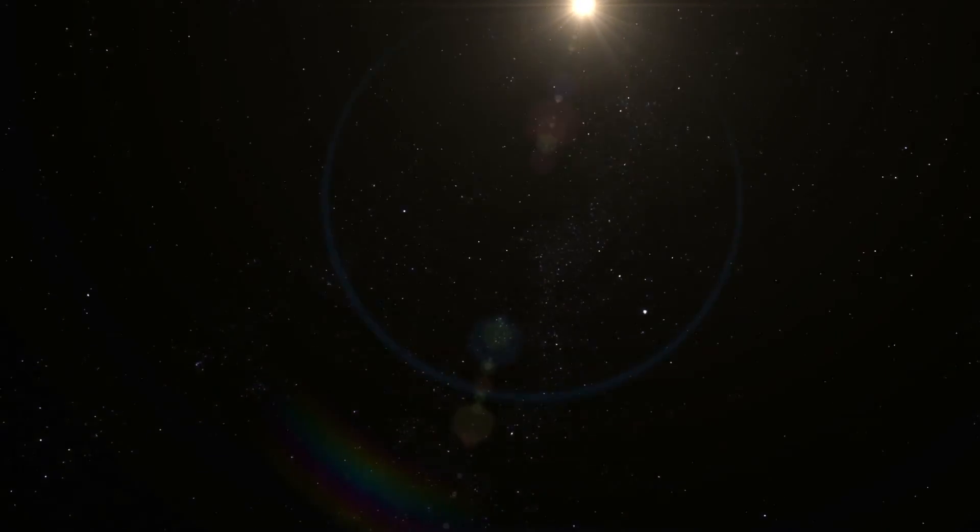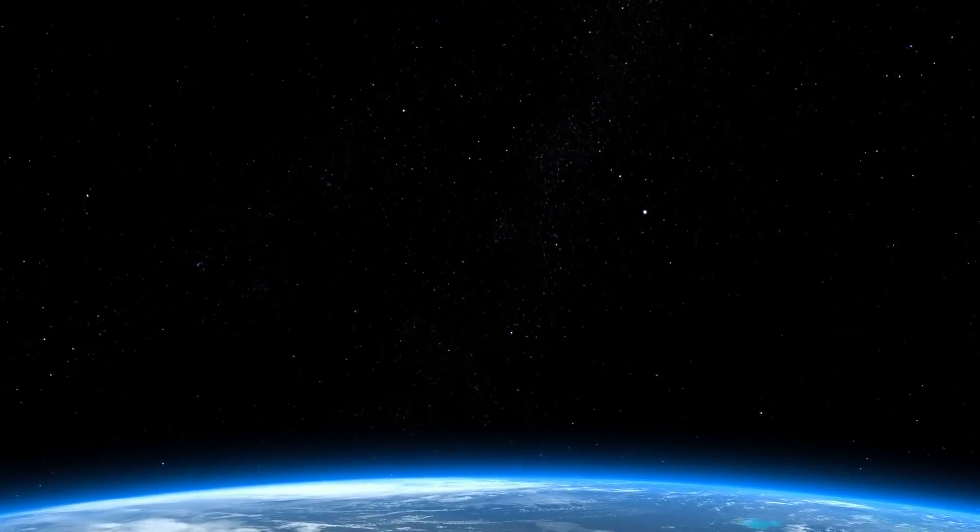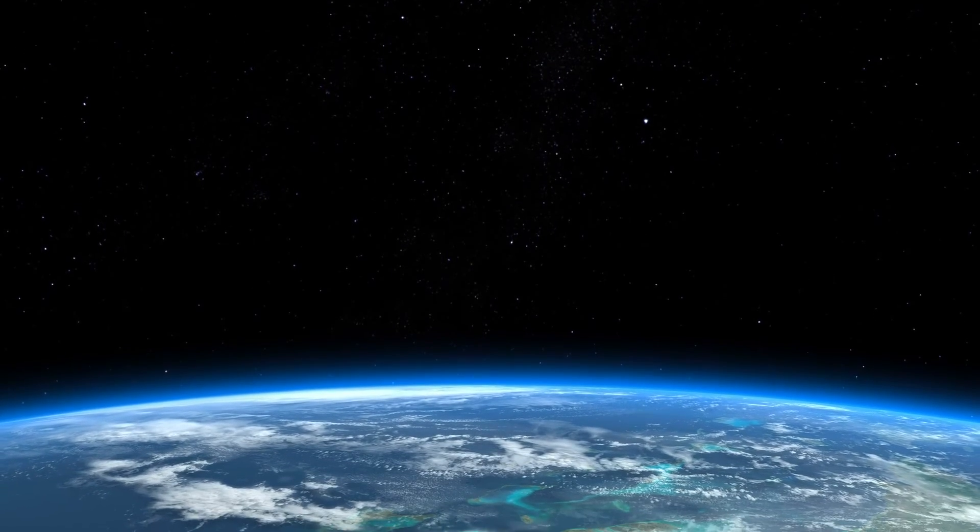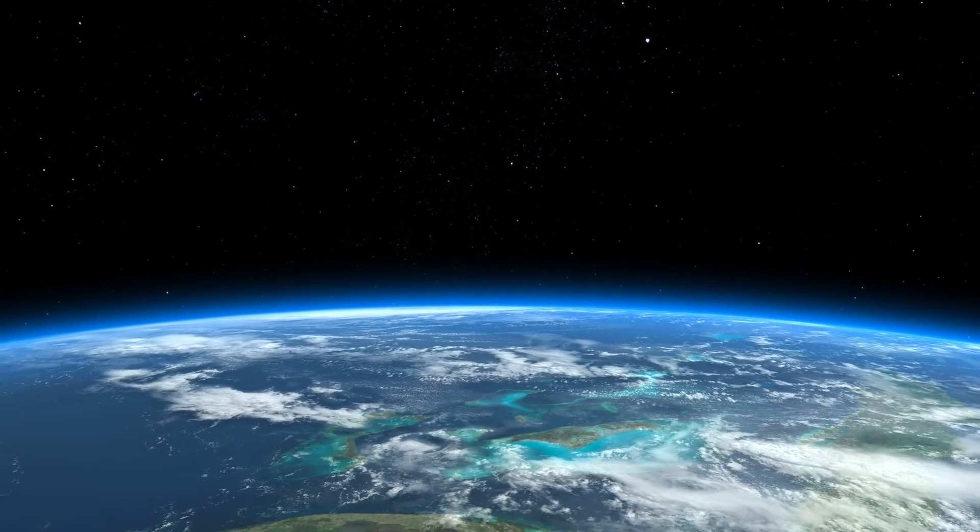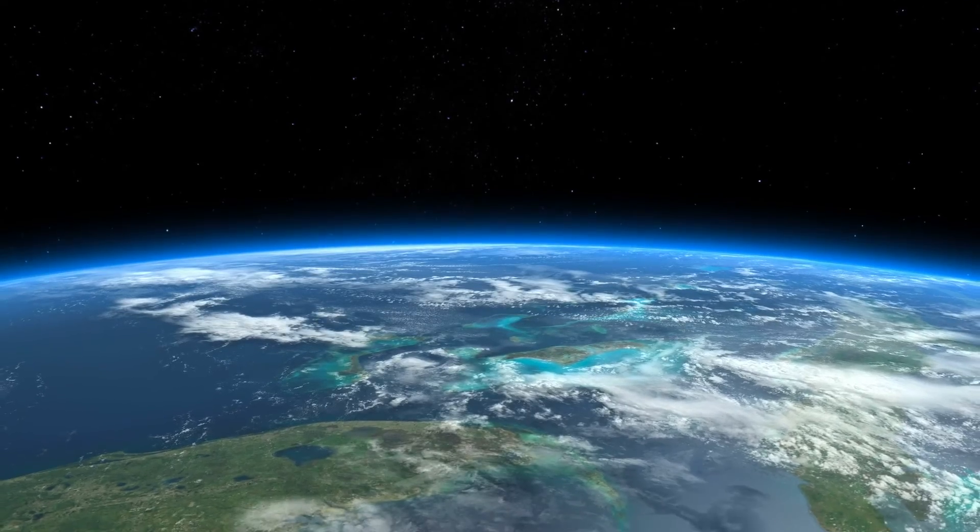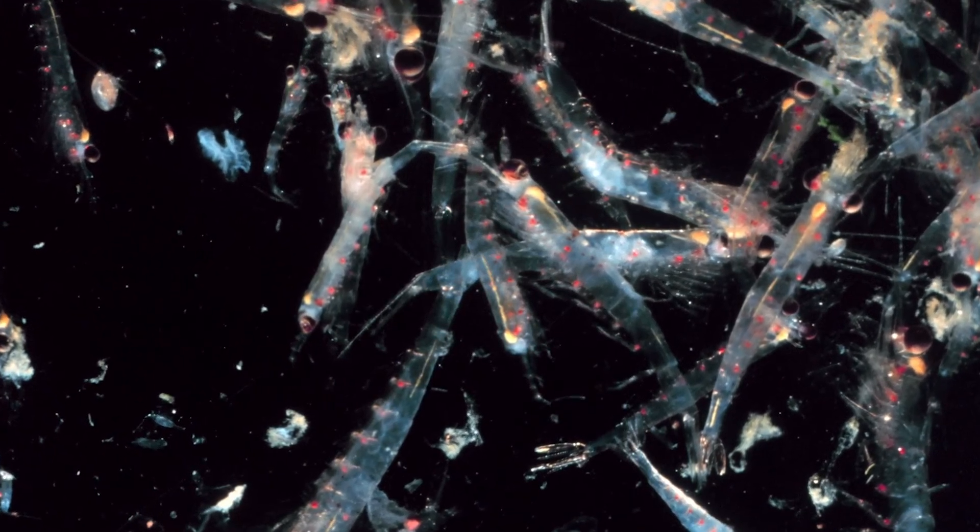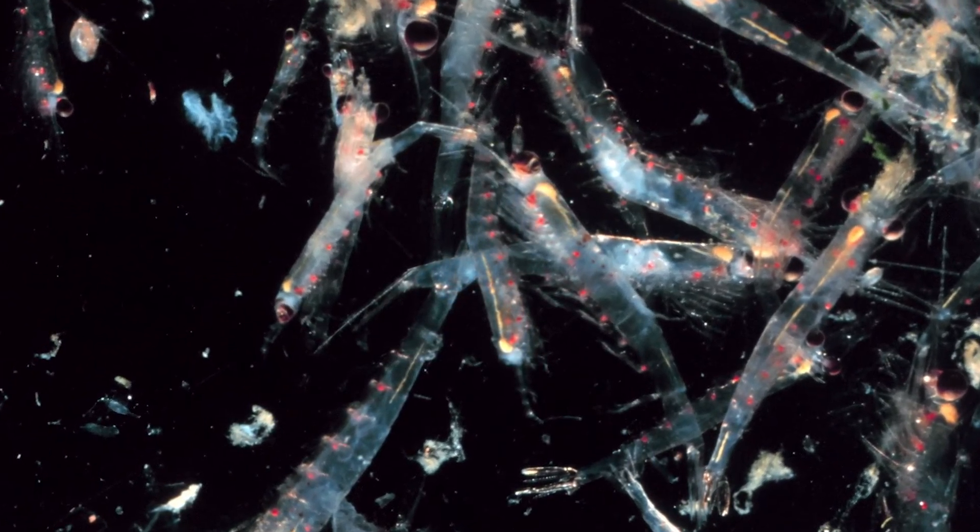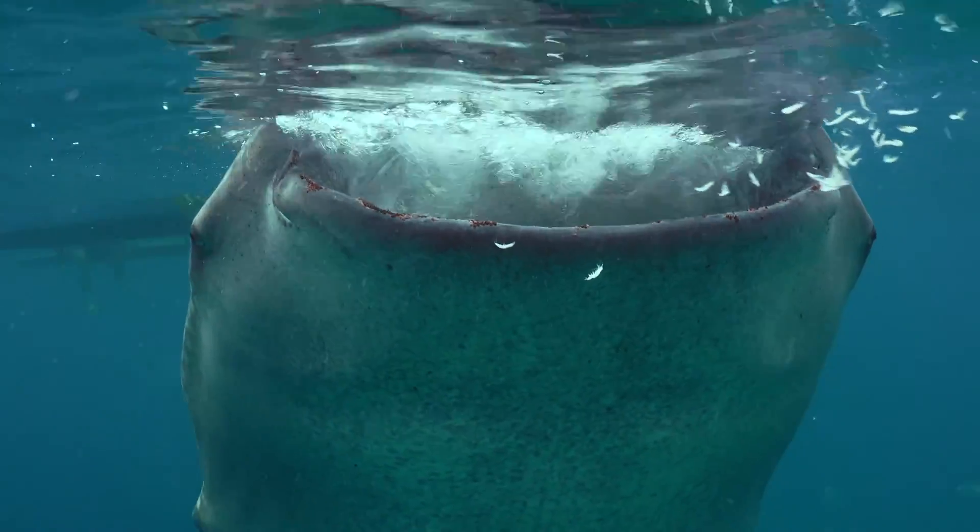Scientists have long chalked up ocean mixing to winds and tides. But now it looks like that's not the whole story. Oceans are teeming with shrimp-like krill. They're the base of the marine food chain.